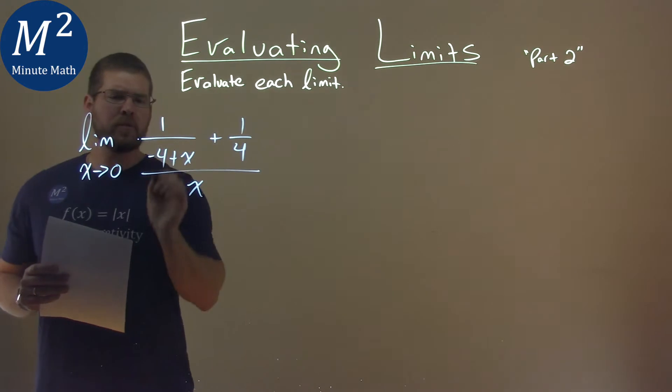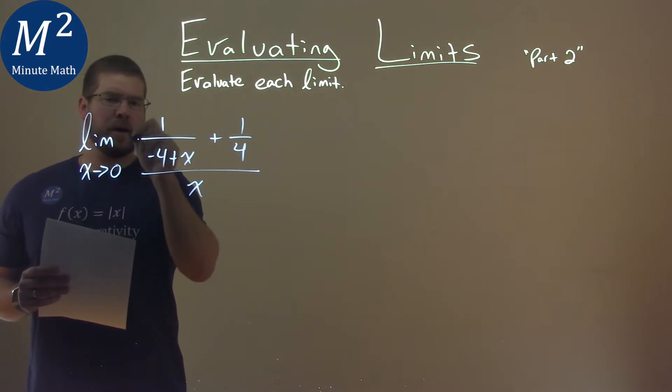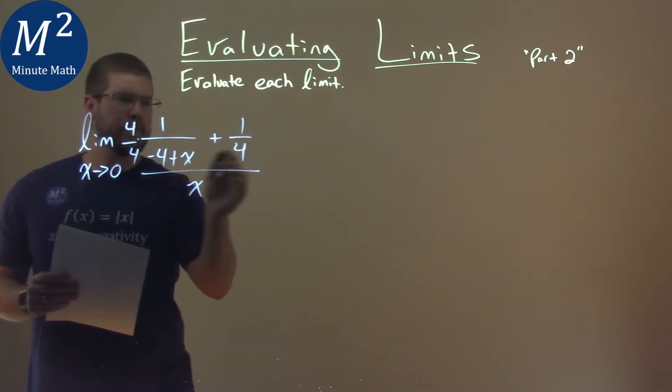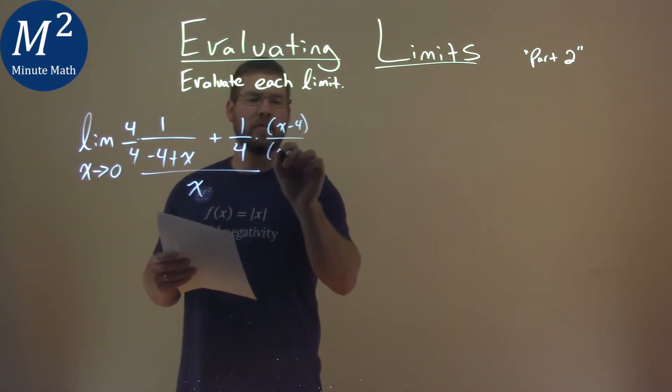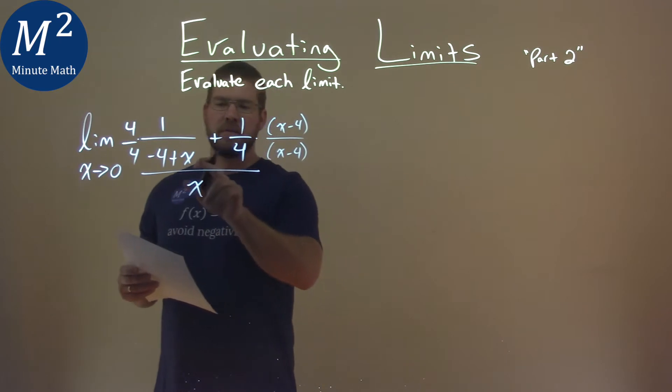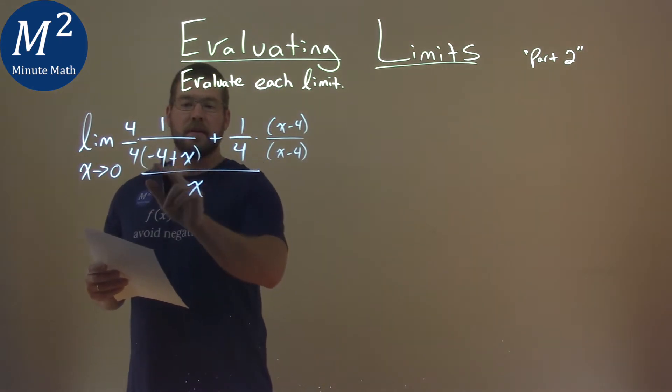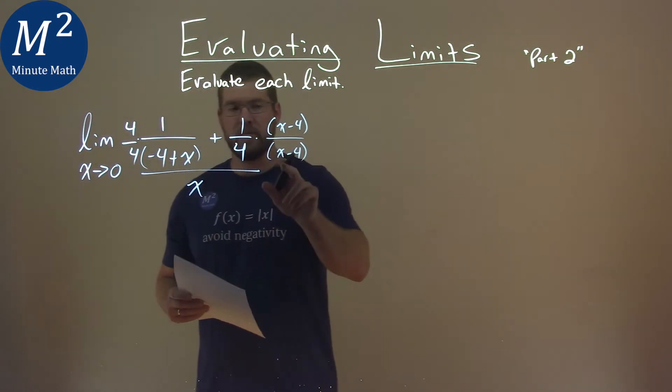So to do that, I'm going to multiply this part here by 4 over 4, and the second fraction to find a common denominator, x minus 4 over itself. Notice, parentheses here, negative 4 plus x is the same as x minus 4.